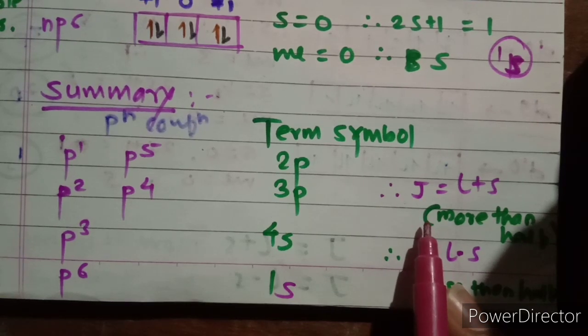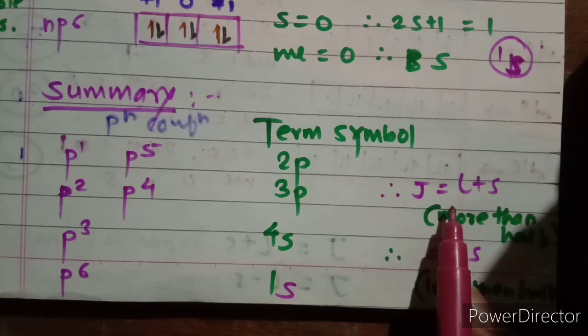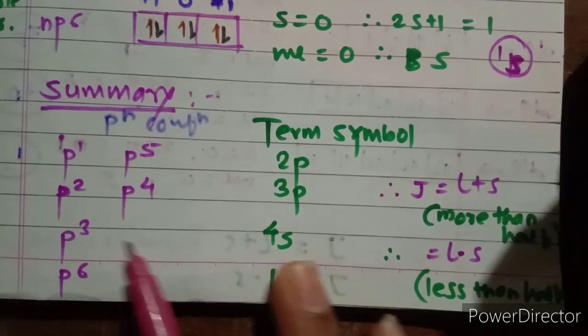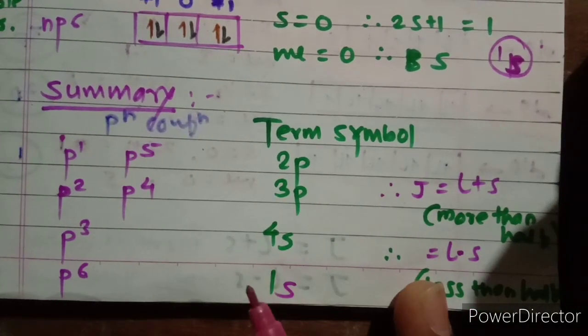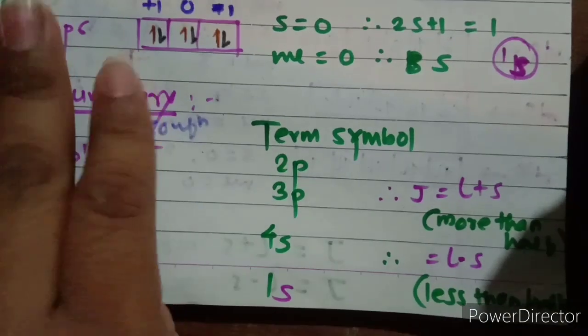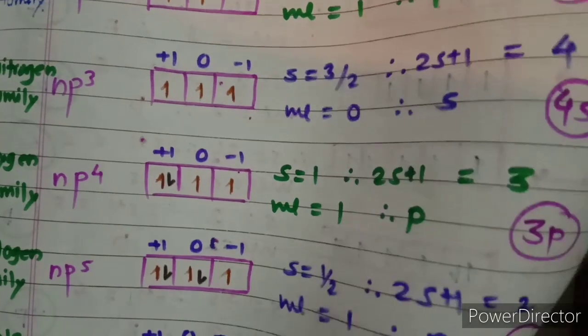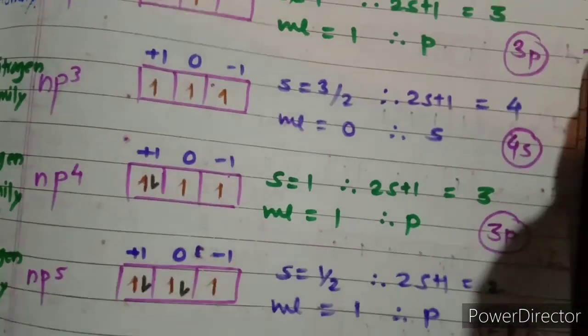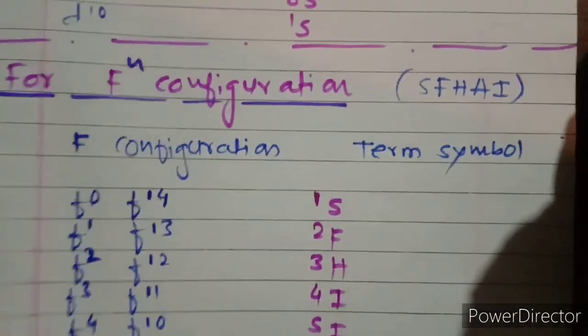These terms differ only by their J value. For more than half-filled configurations — p3, p4, p5, p6 — J = L+S. For less than half-filled — p1, p2 — J = L−S. This completes the term symbols for the pn configuration covering all main-group p-block elements.